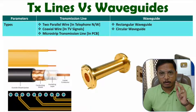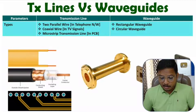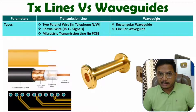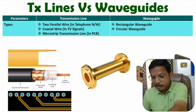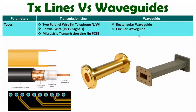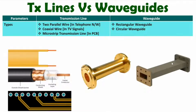With waveguides there are two types: rectangular waveguide and circular waveguide. The rectangular waveguide is a hollow metallic tube having the shape of a rectangle, while the circular waveguide is a hollow metallic tube having the shape of a circle.